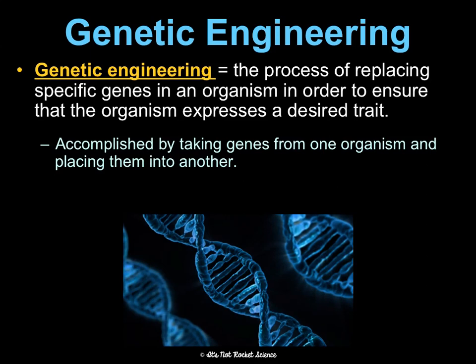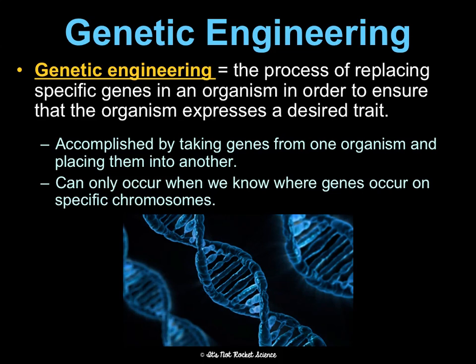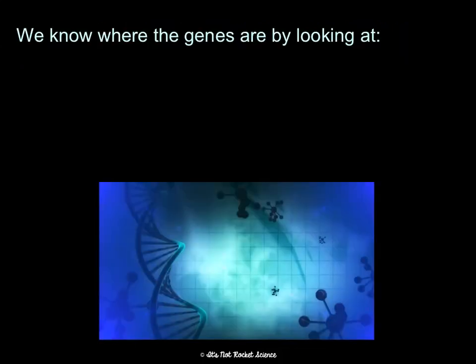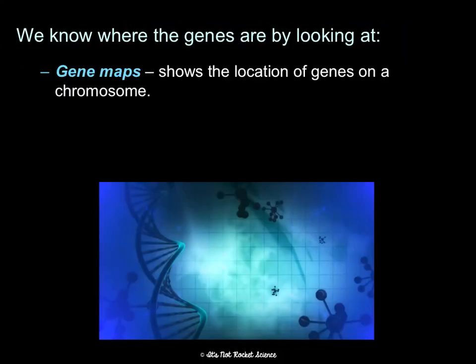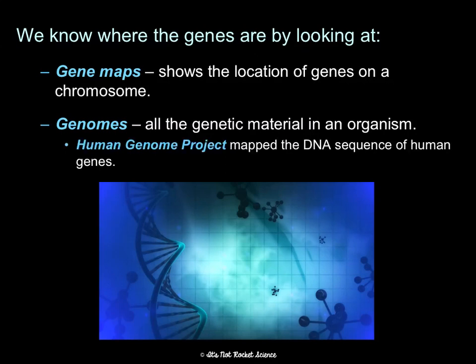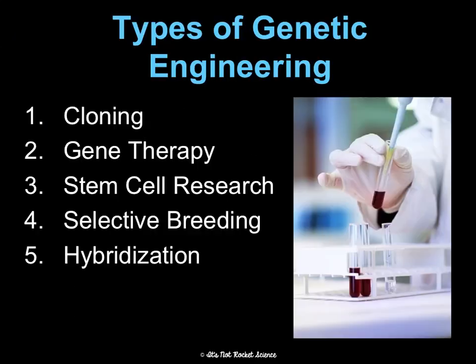This is often accomplished by taking genes from one organism and placing them into another. This can only occur if we know where genes are on specific chromosomes. Luckily, we do know that because we can look at gene maps, which show the location of genes on chromosomes. We also have genomes, which show all the genetic material in an organism, and the Human Genome Project mapped the DNA sequence of human genes.